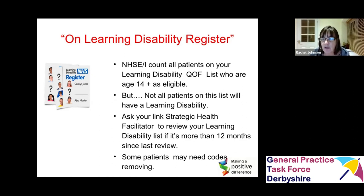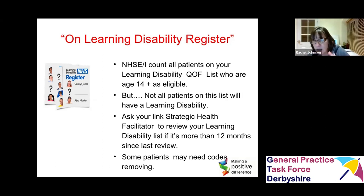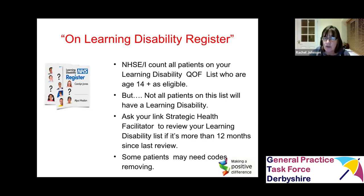That's been a task for us over the last six to eight months — working out how we are counting people versus how the system pulls people out. On your COIF list you're likely to have people with a learning difficulty, people with autism but no learning disability, and even people with cerebral palsy or hearing or visual impairment. Your link strategic health facilitator will have probably looked at your register within the last 12 to 18 months if you're in Derbyshire.